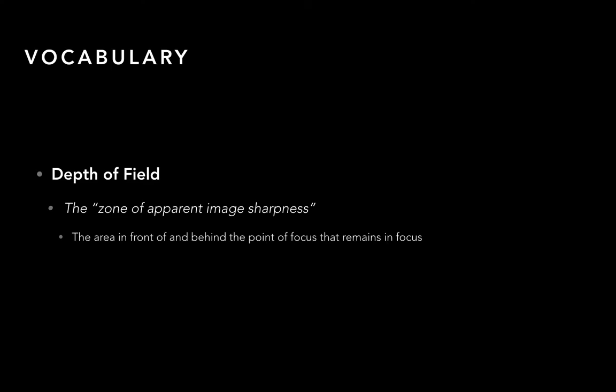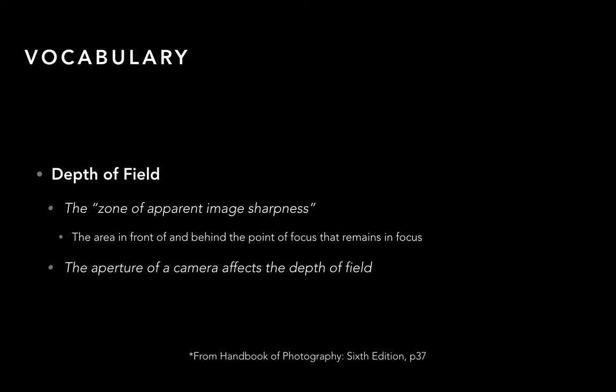What this whole thing is about — the reason we need to know about f-stops — is because of depth of field. Depth of field, at its base, is a zone of apparent image sharpness. Another way of looking at it: it's the area in front of and behind the point of focus that will stay in focus. If you think about shooting a picture of your best friend, the camera focuses on them, and the zone of apparent image sharpness is how much in front of and behind your friend is actually clear. We can control that using the aperture.